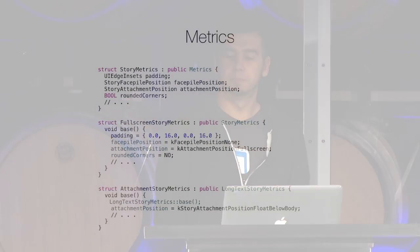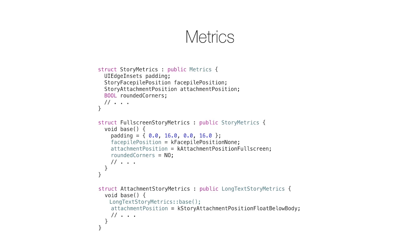A metric structure holds the configuration for a story's appearance at a very high level. This is where we put configuration for padding, font metrics, and directives on how things will be laid out. They do allow for inheritance — our attachment story is like a long text story except it has an attachment position. These are written in C++ because we thought the syntax was nicer. There's not a lot of cruft here, but it does let us inherit different metrics from each other. And since it's in C++, we can access these structures in tight loops where performance matters.